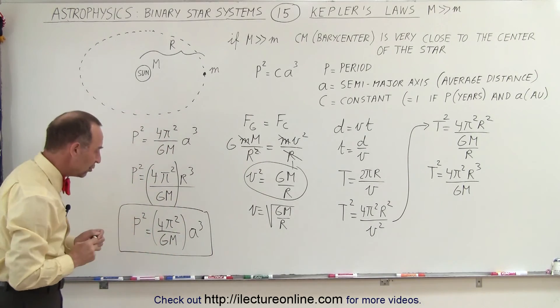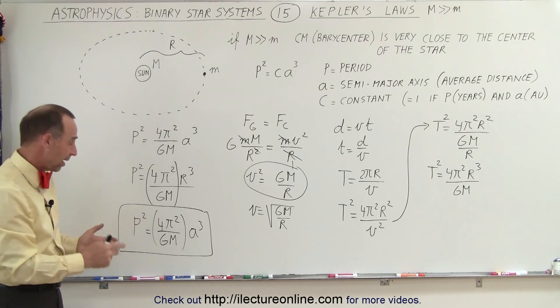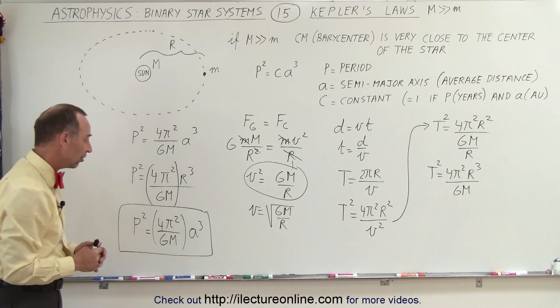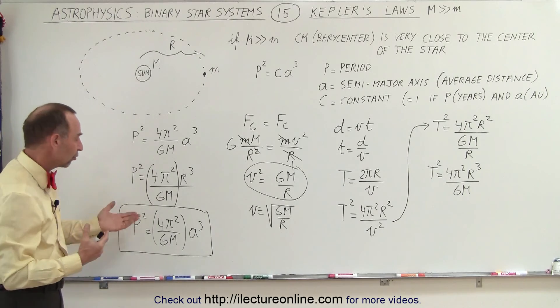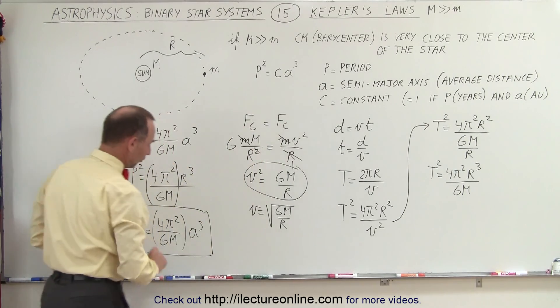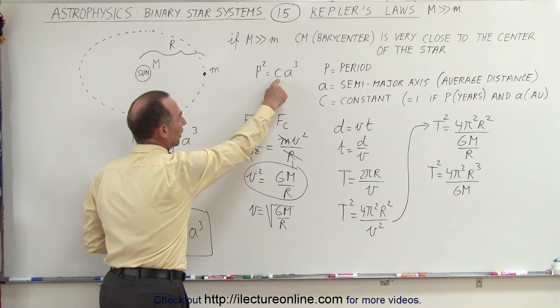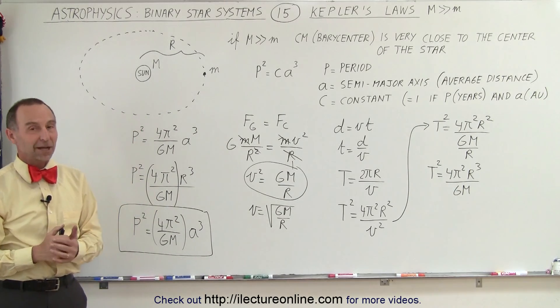Now, he knew this was a constant. He could calculate what the constant was numerically based upon measuring the period and measuring the average distance. But he didn't know where that came from. Now that we had Newton's laws of motion and we had the understanding of centripetal force, when we put that together, we can clearly see that that constant that Kepler realized was there is actually equal to that. And that's how it's done.